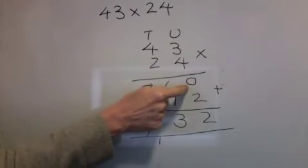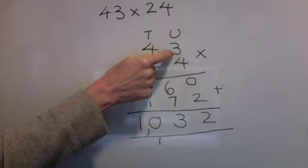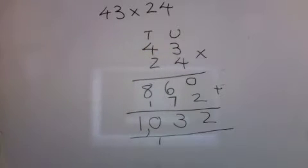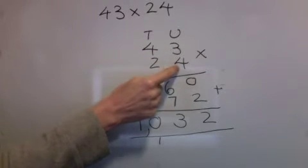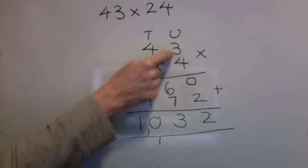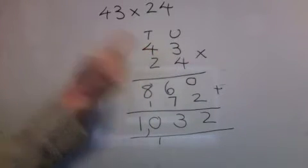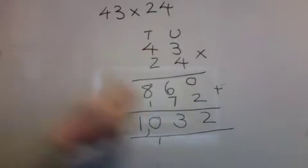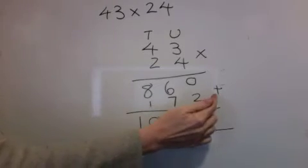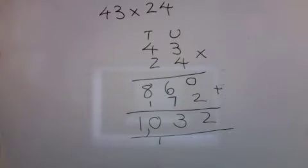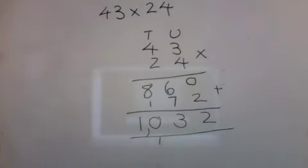1,032. So I multiplied by the 20: nought down, then units and tens. Then I multiplied by the 4, units first working left. I added them together and got my answer.